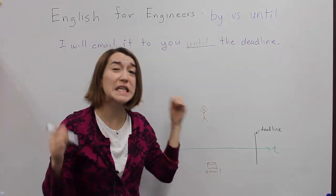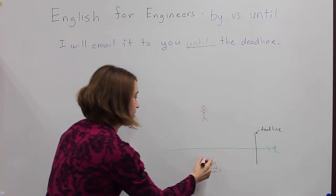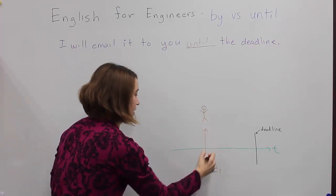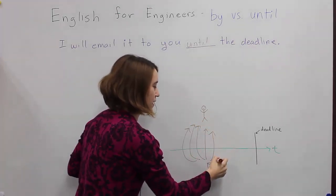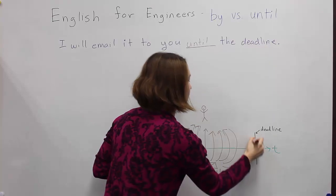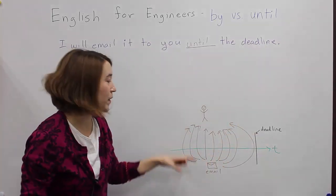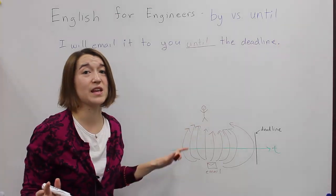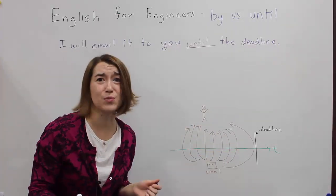It means that you are continually going to send me this email. So instead of, you know, you're going to send it here. You're going to send it to me this time, this time, this time. You're actually infinitely going to send me emails until the very end of the deadline. So if you used until here, you would mean you are continually sending this to me until the deadline. Please do not do that. That would, I would get too many emails.